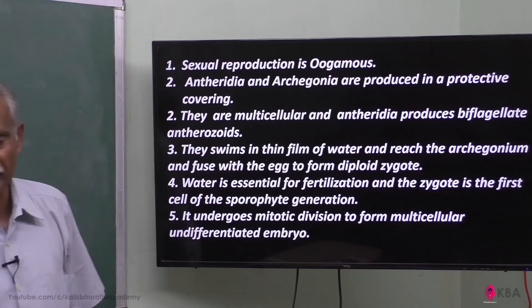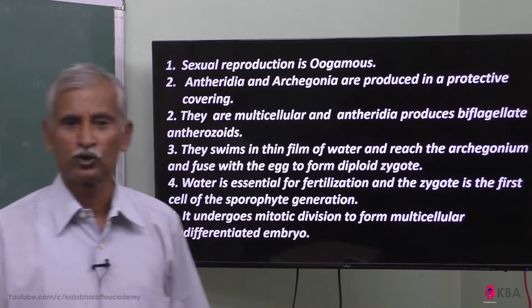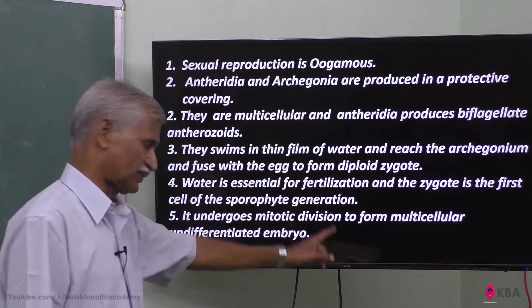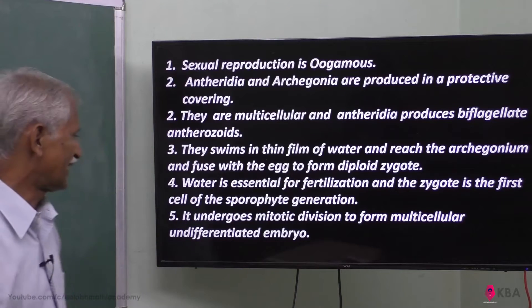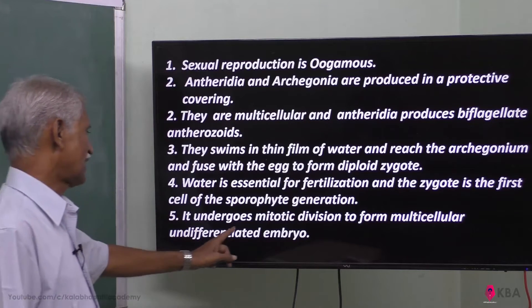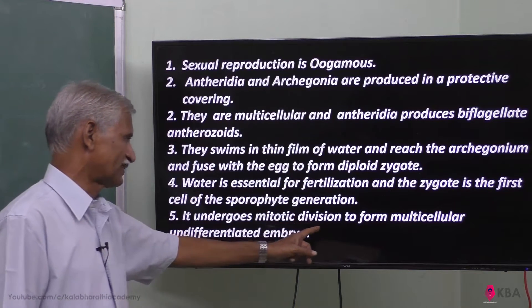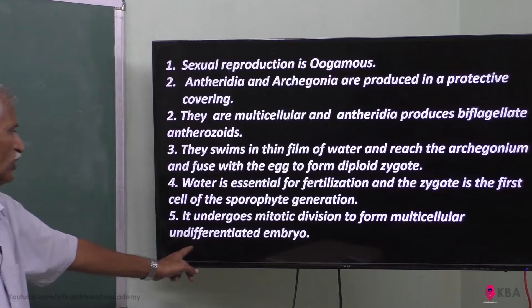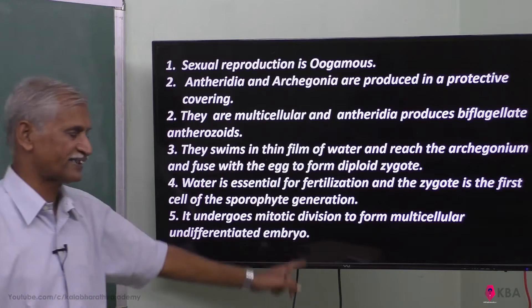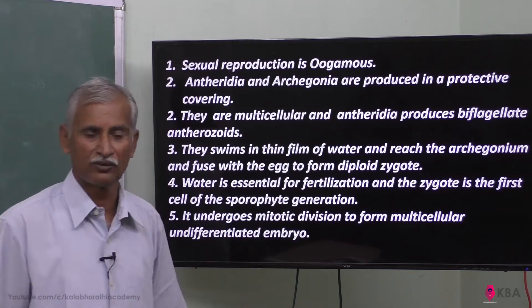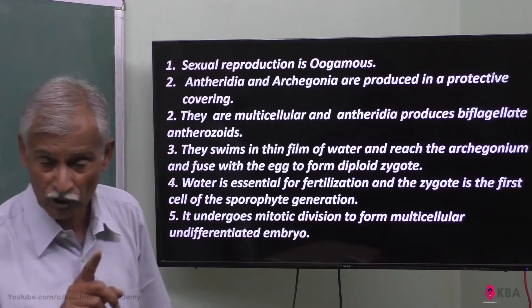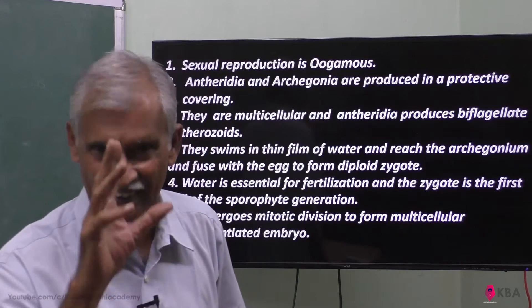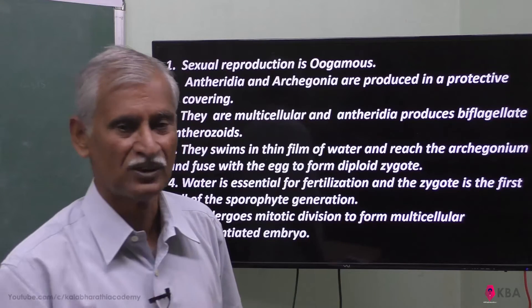In alternation of generations, the zygote marks the start of the sporophytic generation. The zygote undergoes mitotic division to form a multicellular undifferentiated embryo.